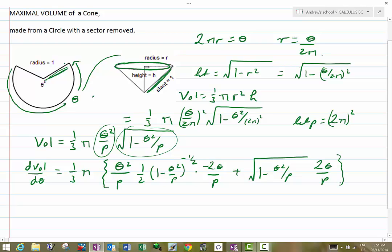If we deal with the first little bit of the expression, the half and the 2 will cancel out. We've got p squared underneath and we've got theta cubed on the top. So this is going to simplify as 1 third pi into minus theta cubed over p squared, and then the root is going to be underneath as well, plus 2 theta over p root 1 minus theta squared over p.